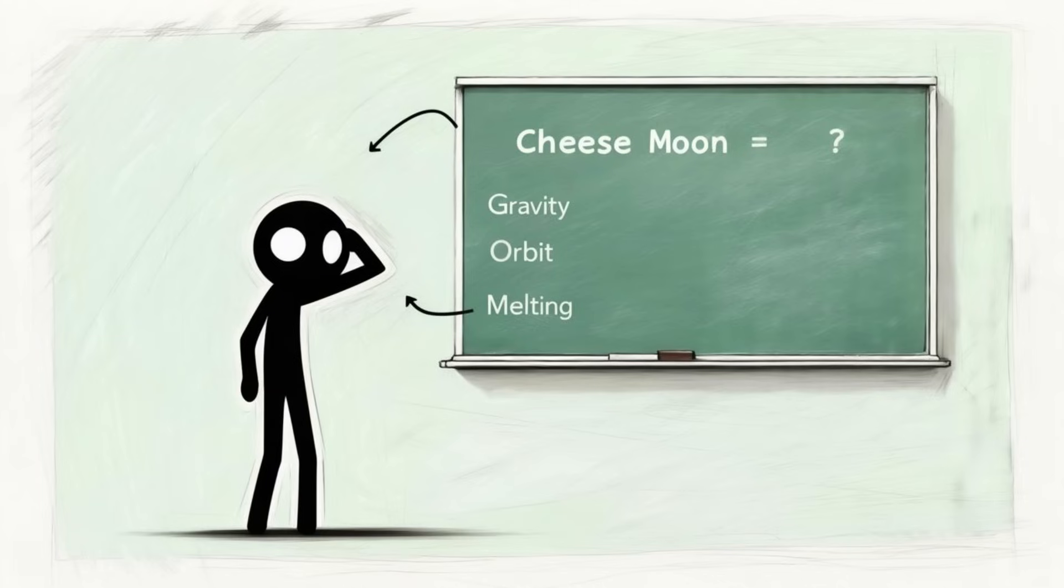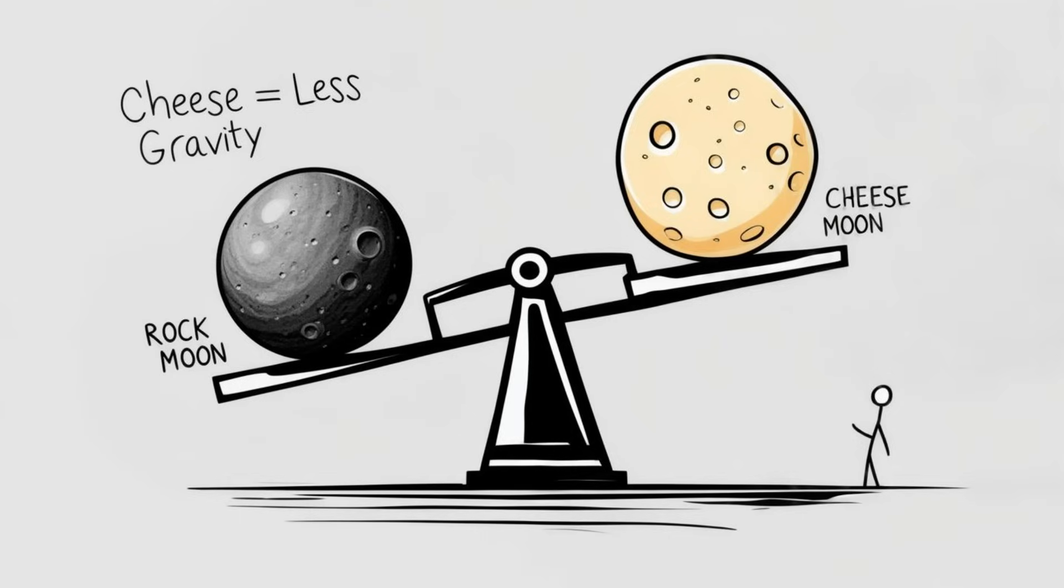The real question is, how would a moon made of cheese actually behave? Let's start with gravity. The moon's gravity is about one-sixth of Earth's, thanks to its mass and density. But cheese is way less dense than rock, about 10 times less, depending on the type. That means our cheesy moon would be much lighter. In fact, it might only have around one-tenth of the original moon's mass. Less mass means less gravity.